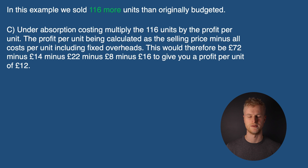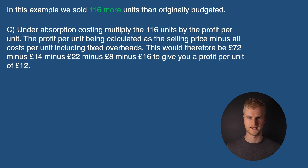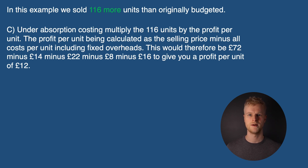Method C — under absorption costing: we multiply our 116 units by the profit per unit. The profit per unit is calculated as the selling price minus all costs per unit including fixed overheads, which would be £72 minus £14 minus £22 minus £8 minus £16 to give us a profit per unit of £12.